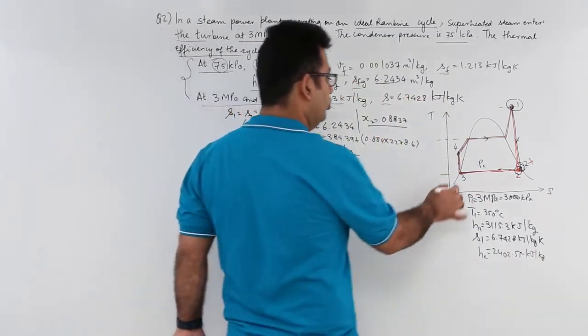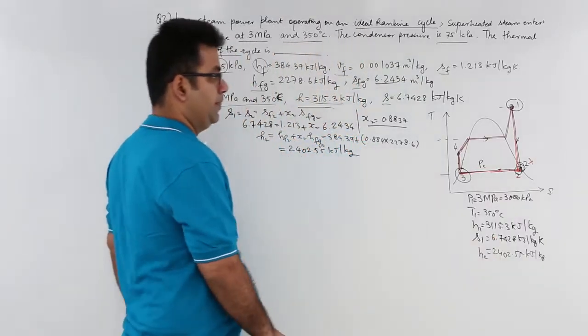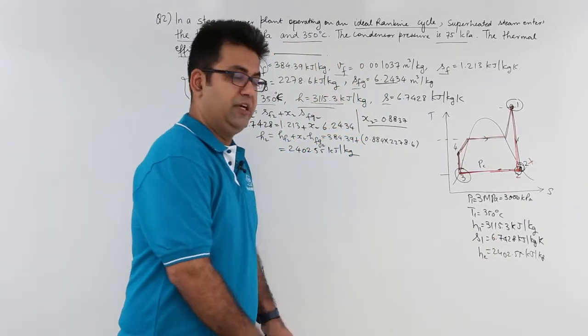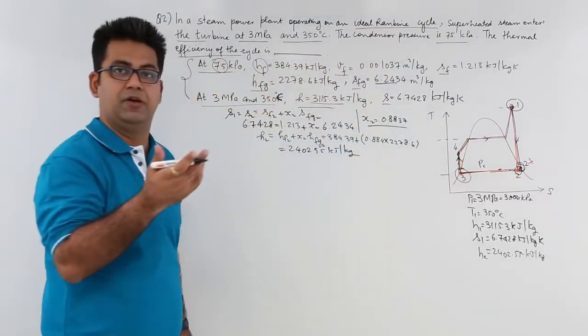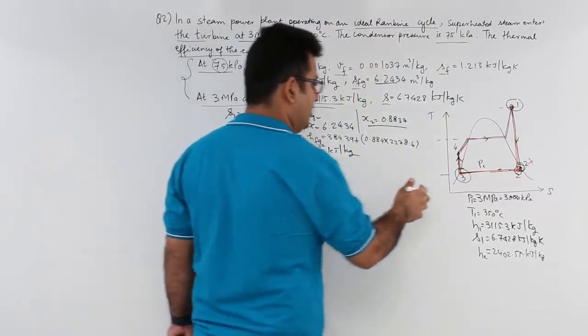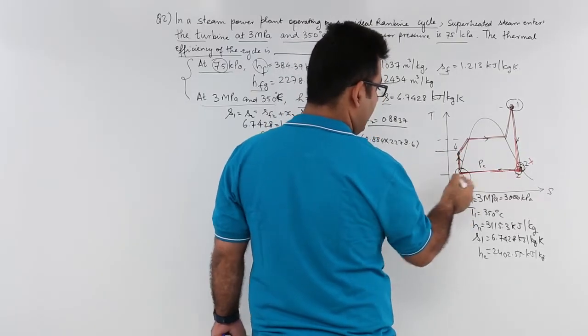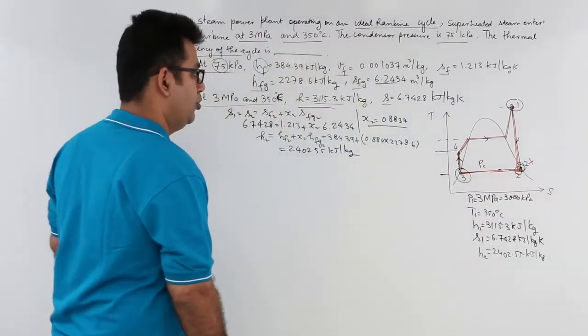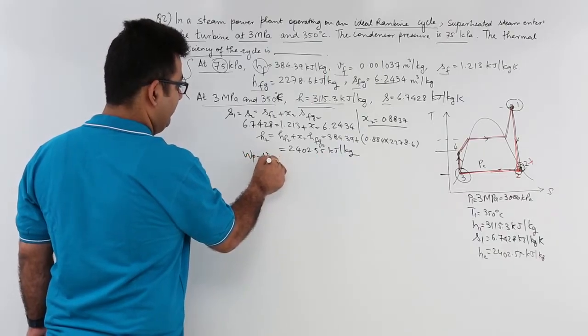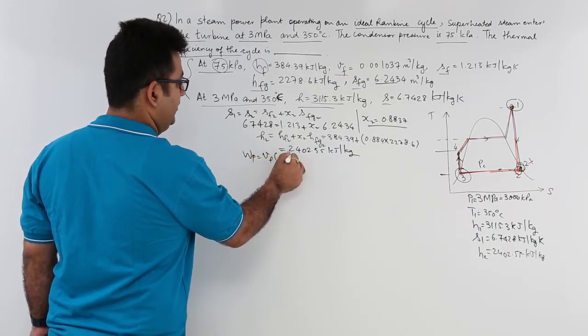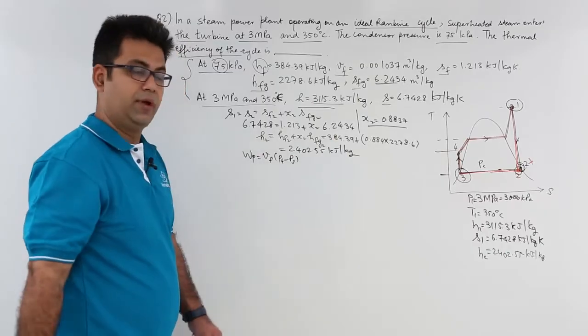Now, let us go to state 3. Before I go to state 3, this is the pump work. I know the pressure at which this is operating. I know this pressure. So, pump work is basically VF into P4 minus P3.